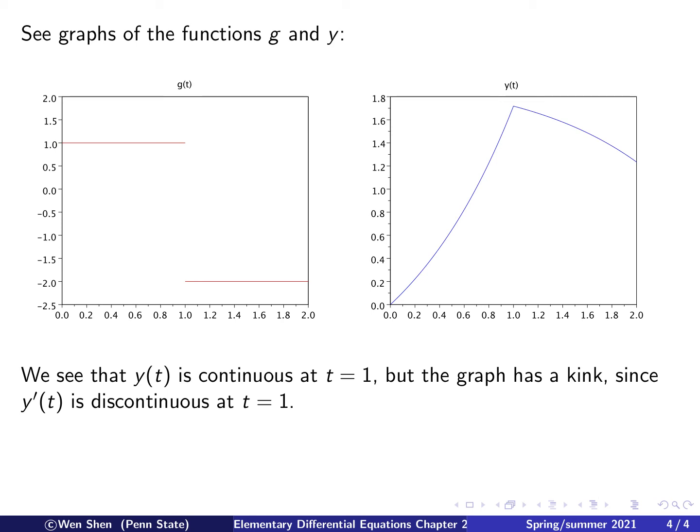And the jump here on the right-hand side can be observed in the solution. The graph of the solution at t equals 1, here we see that the solution right here at that point is not differentiable because the left derivative and the right derivative are different. So, it has a kink, but the solution is continuous.